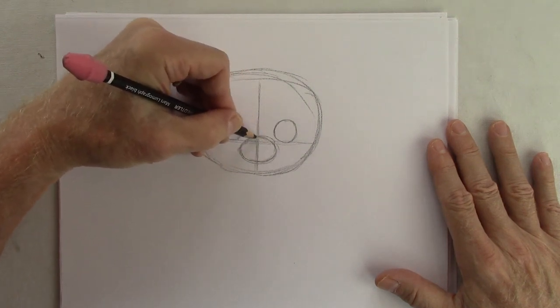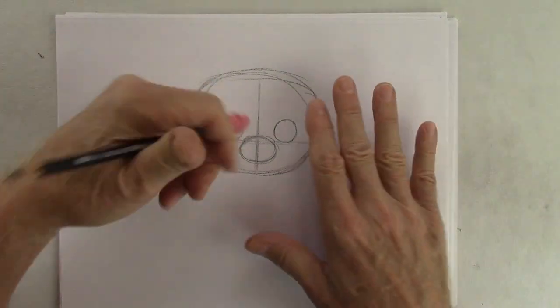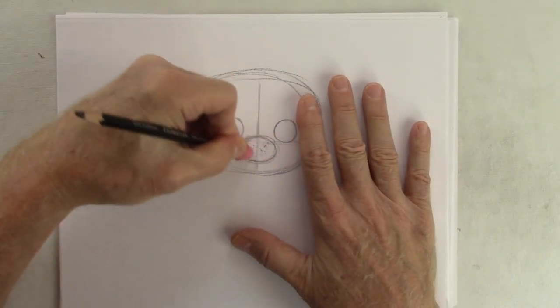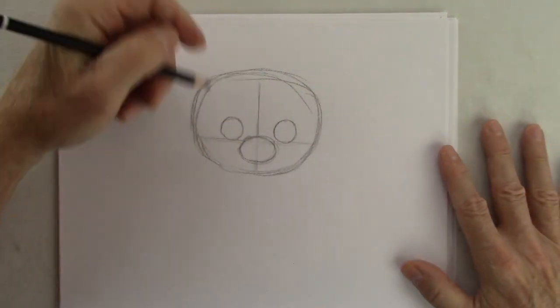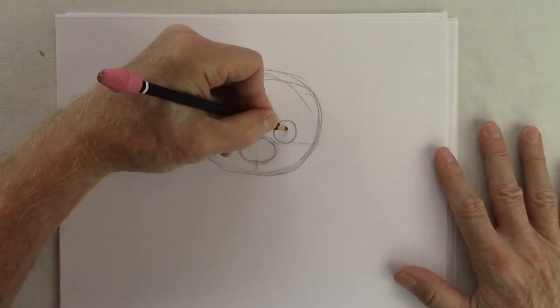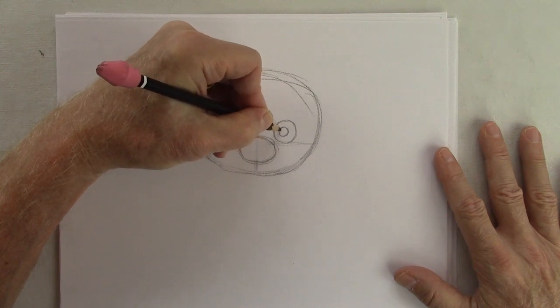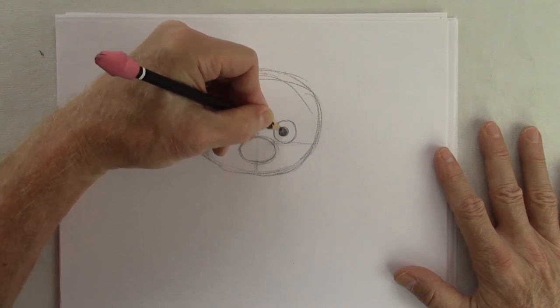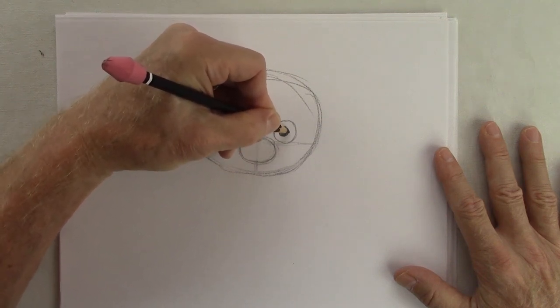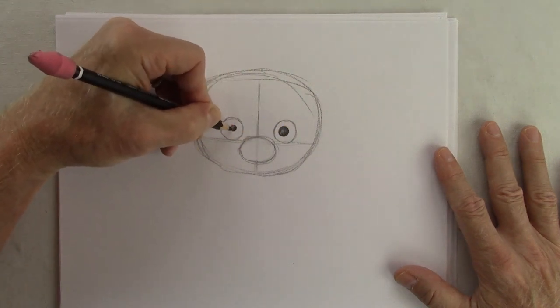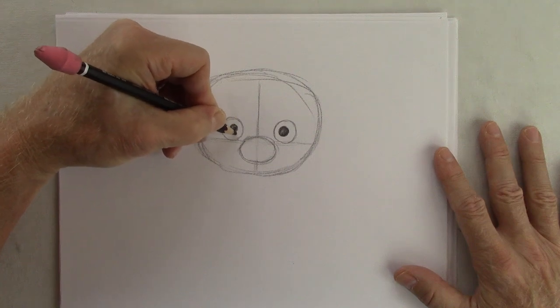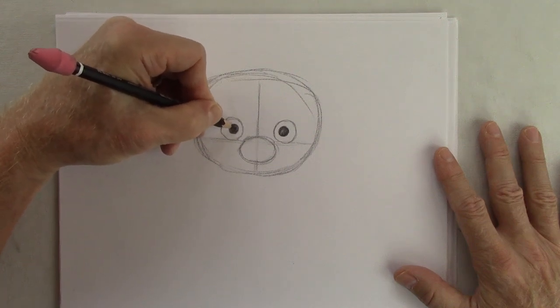Let's erase inside that. Now let's put some eyes in here to get things going, make them look real. Right now he looks like a construction, but once you start finishing things like eyes and nose and mouth, it starts to take on that feeling of reality.